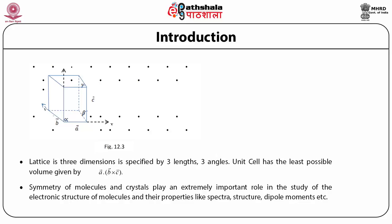A, B and C are the three length parameters which specify the lattice, and the angles between them are specified by Alpha, Beta and Gamma. The symmetry of molecules and crystals plays an extremely important role in the study of the electronic structure of molecules and their properties like spectra, structure, and dipole moments. In the case of crystals, symmetry allows us to study the diffraction of waves from crystals and helps us find the electronic structure, paramagnetic resonances, etc.